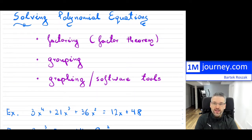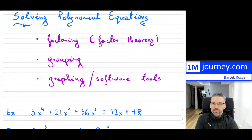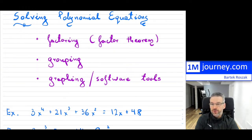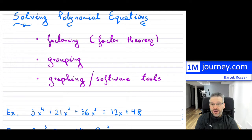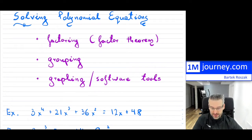The first strategy is basically trying out factoring and using the factor theorem, or you may remember it as the remainder theorem from grade 11. There is a little bit of guessing involved. Another method is to see if you can group things together and then factor things out to solve your polynomial equation. And lastly, sometimes it may just take too long, and if you do have graphing and software tools, you can use those — I utilize decimals extensively.